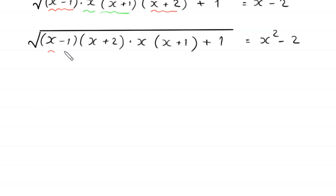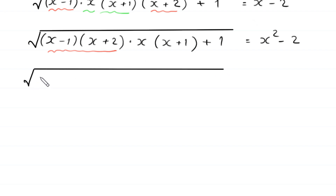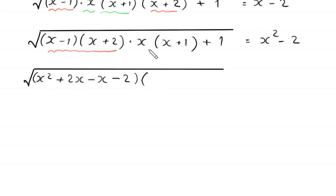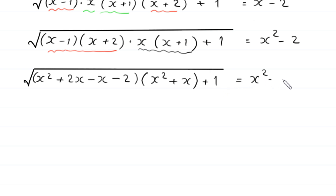Now we multiply these pairs of terms. Expanding (x minus 1)(x plus 2) gives x squared plus x minus 2, and expanding x(x plus 1) gives x squared plus x. So under the square root we have (x squared plus x minus 2)(x squared plus x) plus 1, equal to x squared minus 2.